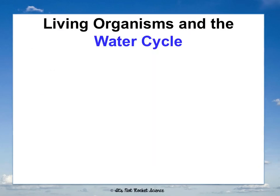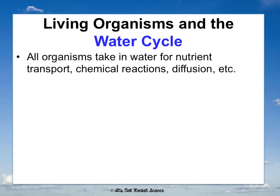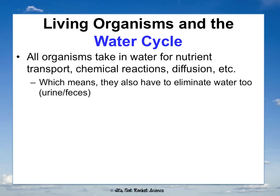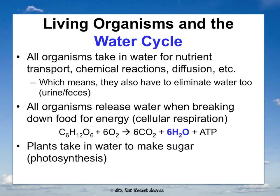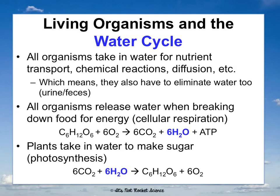For each cycle we'll discuss the living organisms involved and human impact. All organisms take in water for nutrient transport, chemical reactions, and diffusion, and we all eliminate water by peeing and pooping. We also release water when we break down food for energy — water is a product of cellular respiration. Plants take in water to make sugar in photosynthesis. Cellular respiration and photosynthesis contribute to the water cycle but are considered minor steps compared to the six main ones.